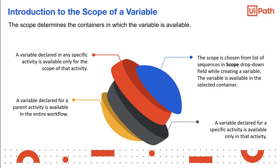The scope field defines the container in which the variable is available. When the variable is created, the user chooses the scope from the scope drop-down field where all major sequences and sections of the program are listed. The user chooses one of these sequences and the variable will then be available in that part of the workflow. The scope of the variable is limited to the selected container.